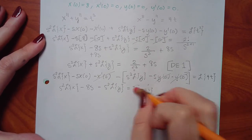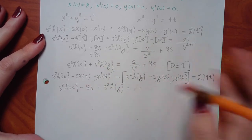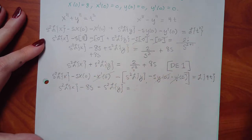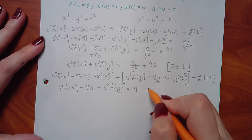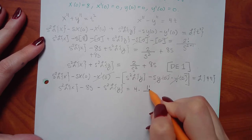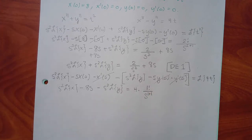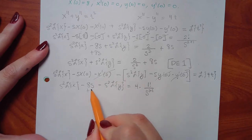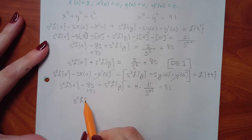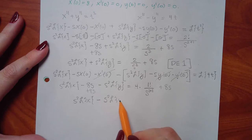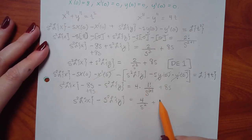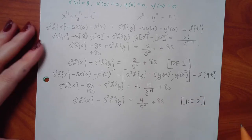The Laplace of 4t: factor out the 4, and Laplace of t is 1 factorial over s to the 1+1, which is 1 over s squared. So 4 times that is 4 over s squared. Moving the 8s over, DE2 becomes: s squared·L{x} minus s squared·L{y} equals 4 over s squared plus 8s.